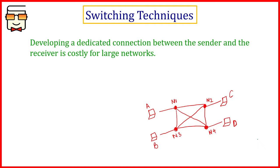It becomes very costly and is not a realistic choice. So what we do is use the concept of switching. Switching basically allows you to do data communication by giving you a temporary passage for the message so that the sender and receiver can communicate between themselves. There is no dedicated direct physical connection established between every sender and every receiver in the world, but every time a communication has to happen, a path is set up, and that path can be a connection using multiple links.